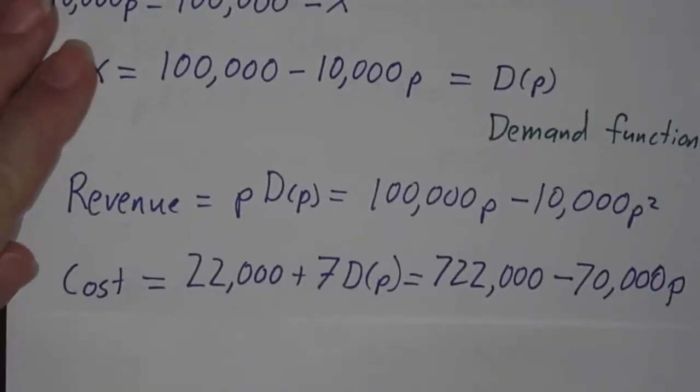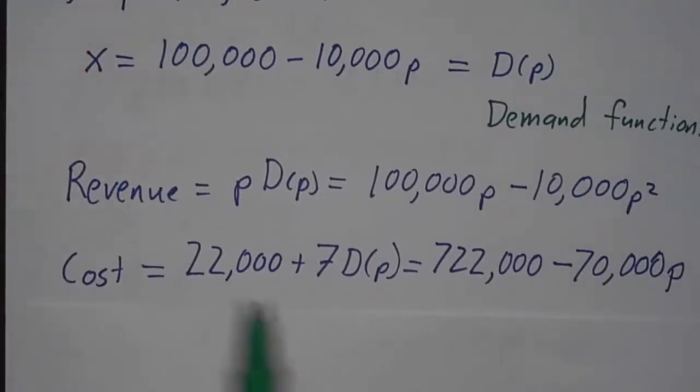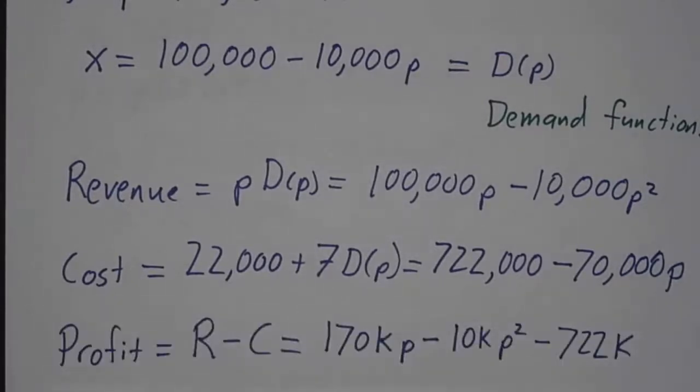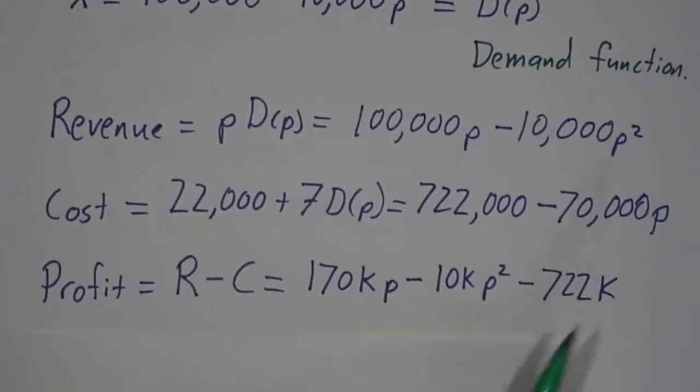And then to figure out your cost, your cost is 22,000 plus 7 times however many widgets you're going to make. So that's 22,000 plus 7 times the demand function. And that works out to 722,000 minus 70,000p. And then the profit is the revenue minus the cost. So it's 170,000p minus 10,000p squared minus 722,000.